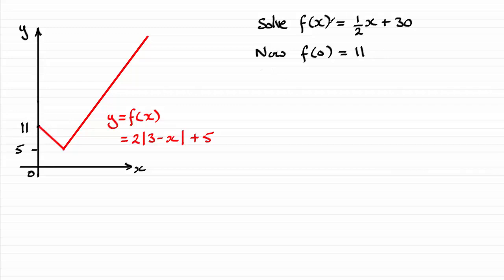So when it comes to sketching f of x equals a half x plus 30, straight line with a positive gradient of a half crossing the y axis here at 30. So let's suppose it's something like this, a line going from here through the y axis. And you can see it crosses f of x just at one point.